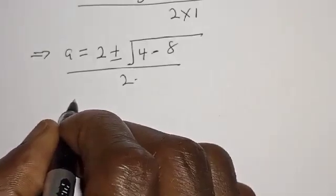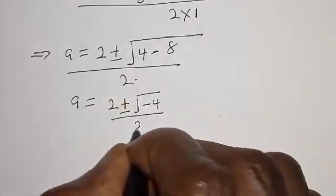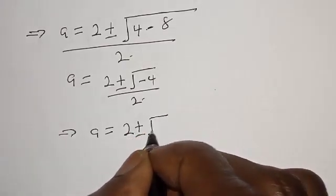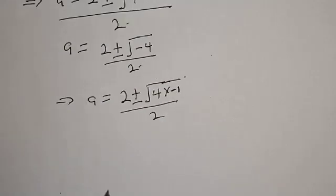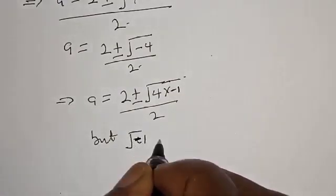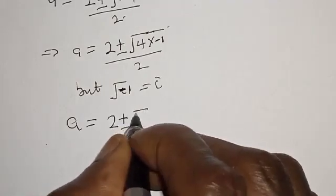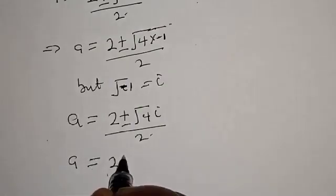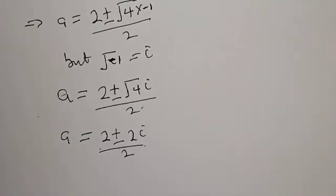Then we have a is equal to 2 plus or minus square root of 4 minus 8, which is minus 4, over 2. Then we have 2 plus or minus square root of 4 multiplied by minus 1, divided by 2. But square root of minus 1 is equal to i, therefore we have a is equal to 2 plus or minus root 4 times i over 2.